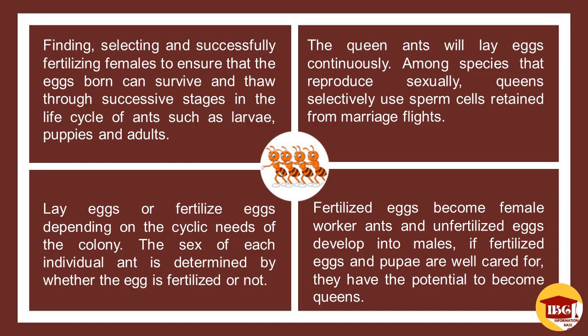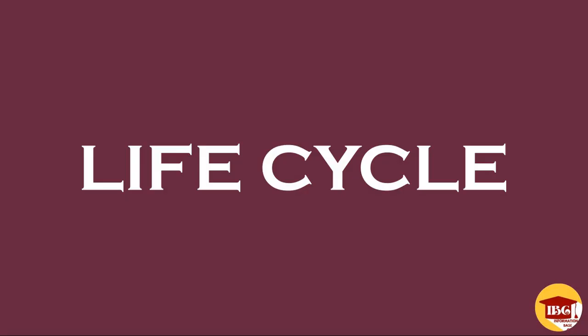The sex of each individual ant is determined by whether the egg is fertilized or not. Fertilized eggs become female worker ants and unfertilized eggs develop into males. If fertilized eggs and pupae are well cared for, they have the potential to become queens.